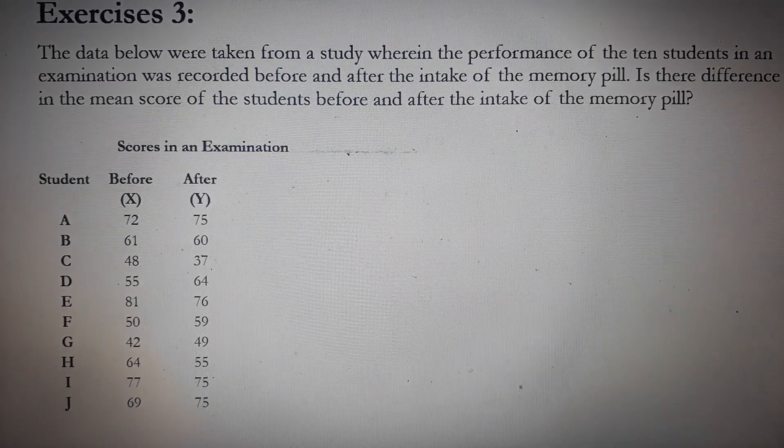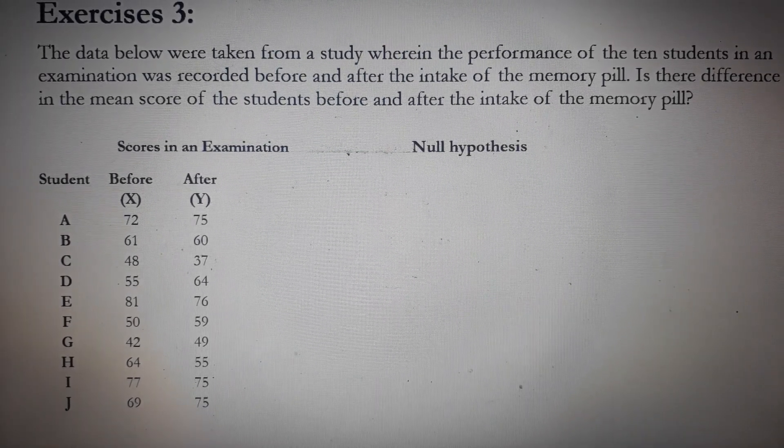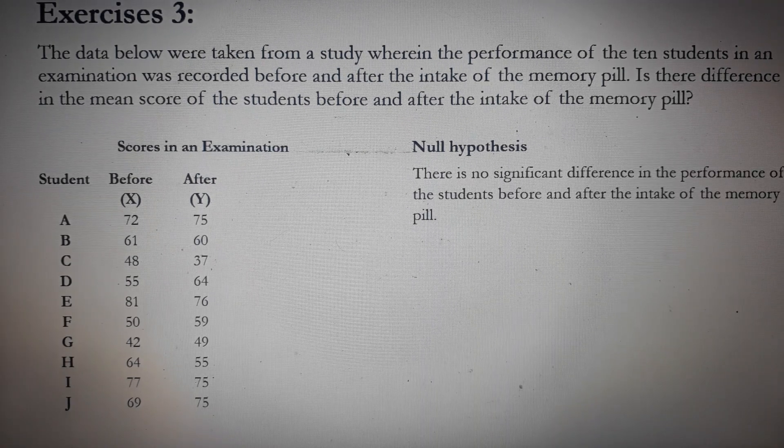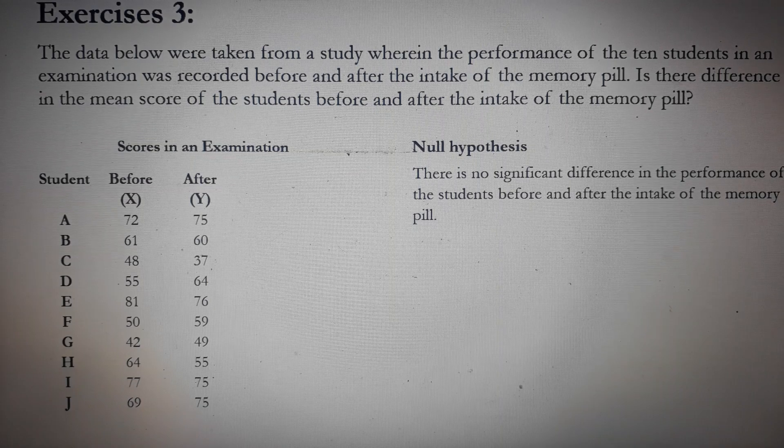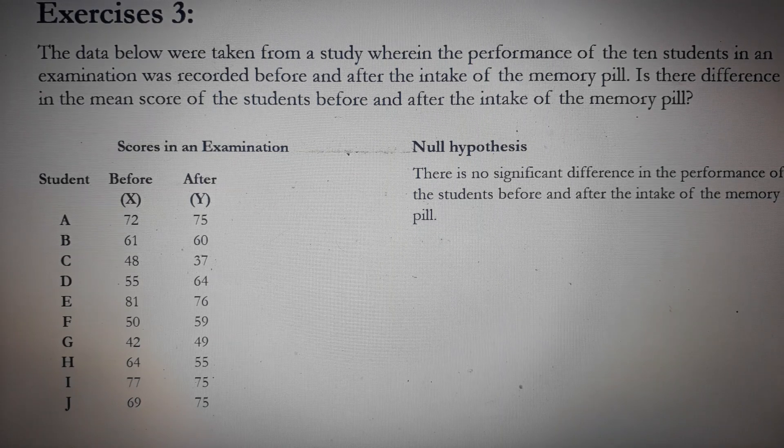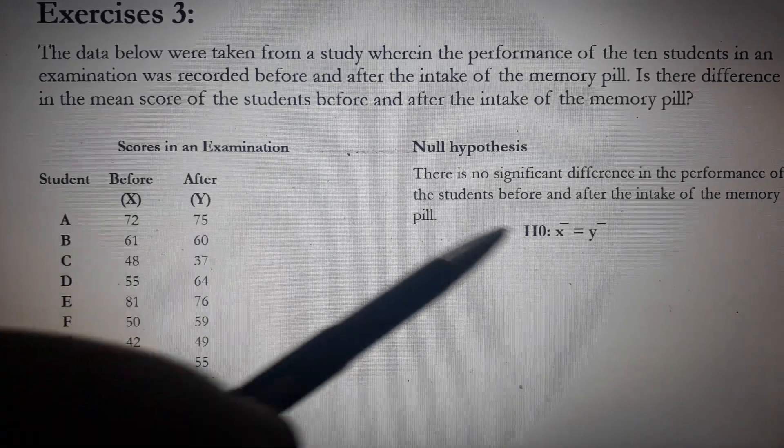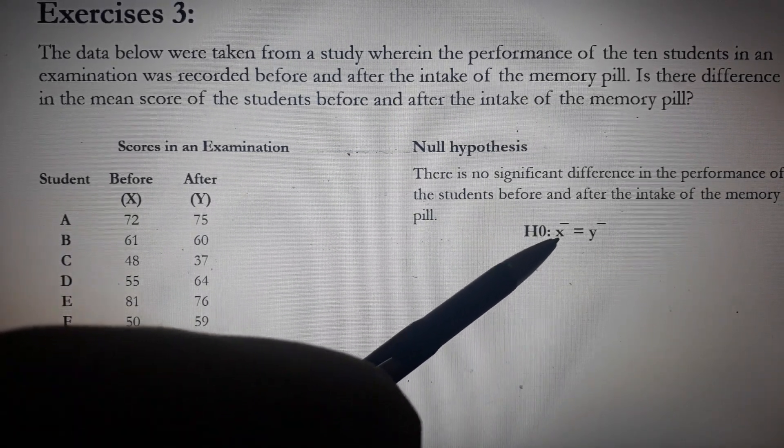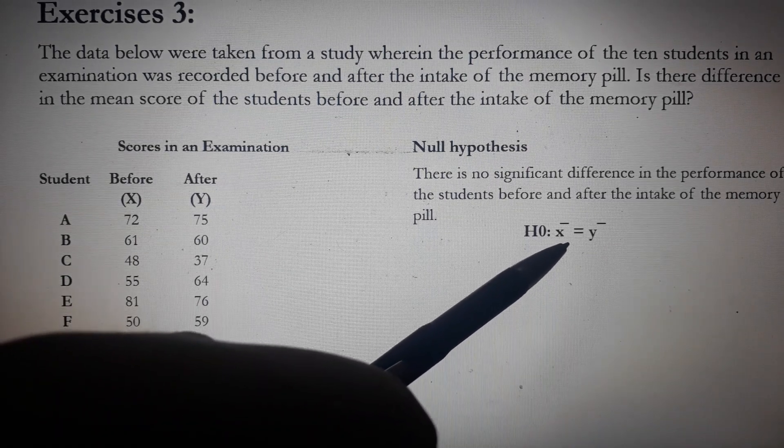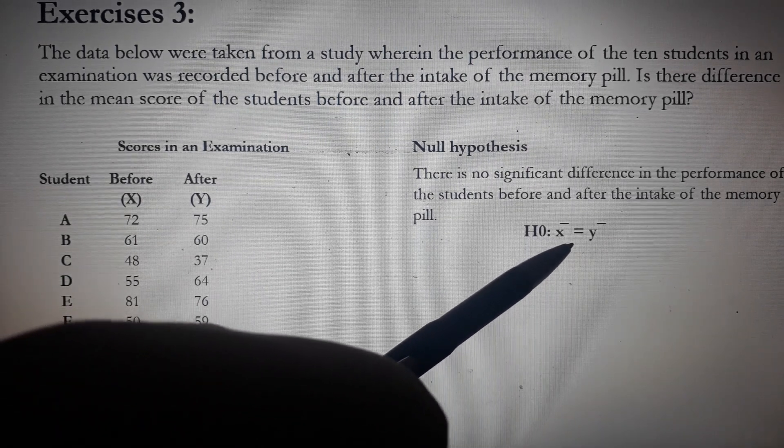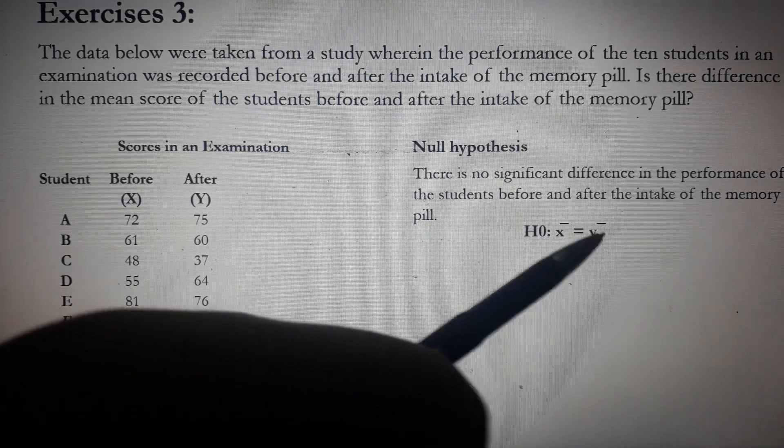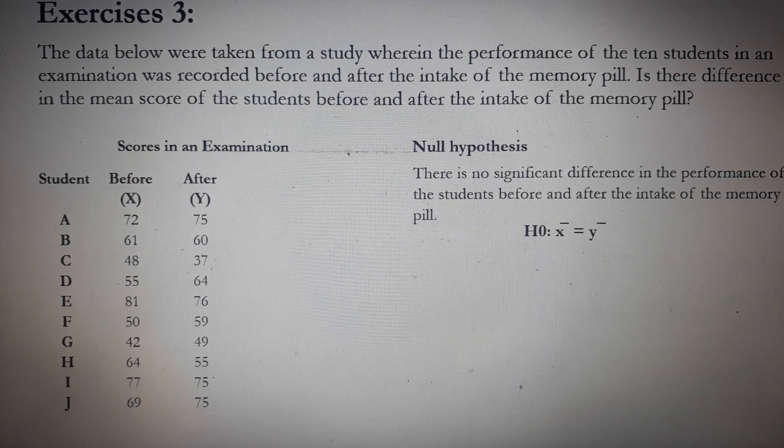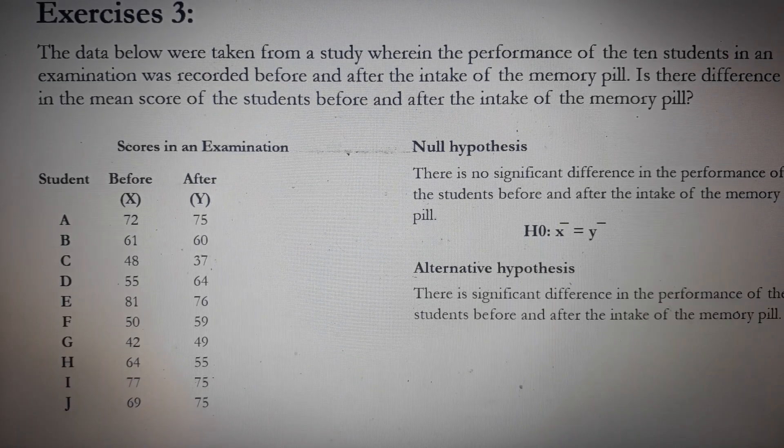Let's write the hypothesis. Our null hypothesis is there is no significant difference in the performance of the students before and after the intake of the memory pill. In symbol, HO says here that the mean of the examination before is equal to the mean of the examination after because there is no significant difference.